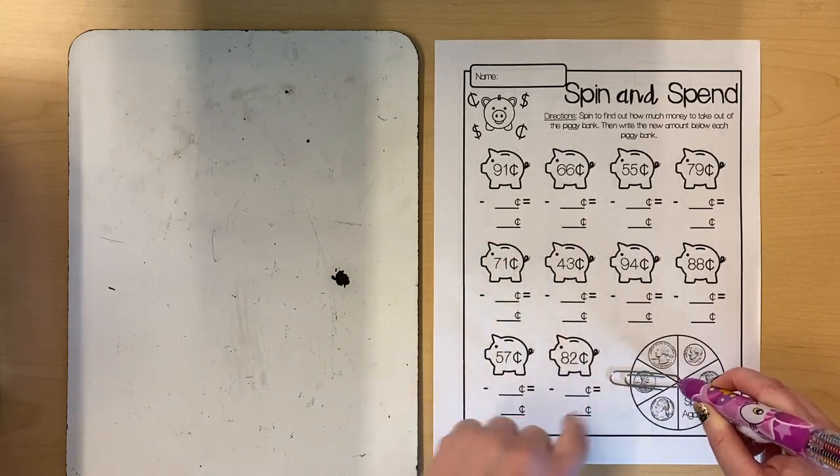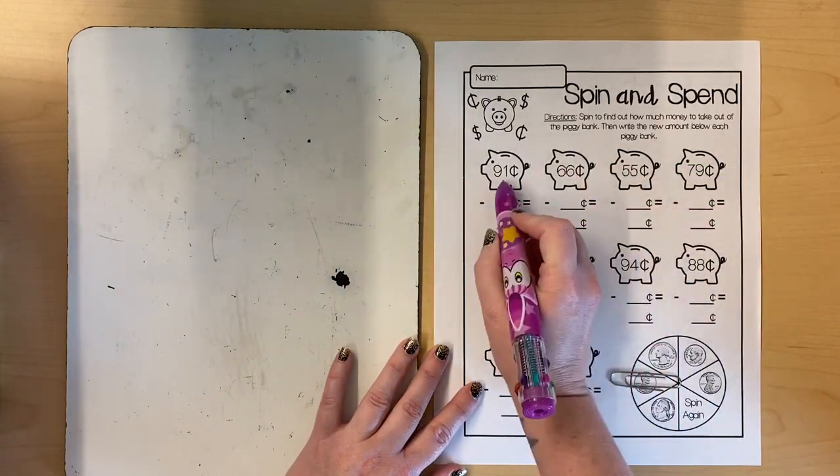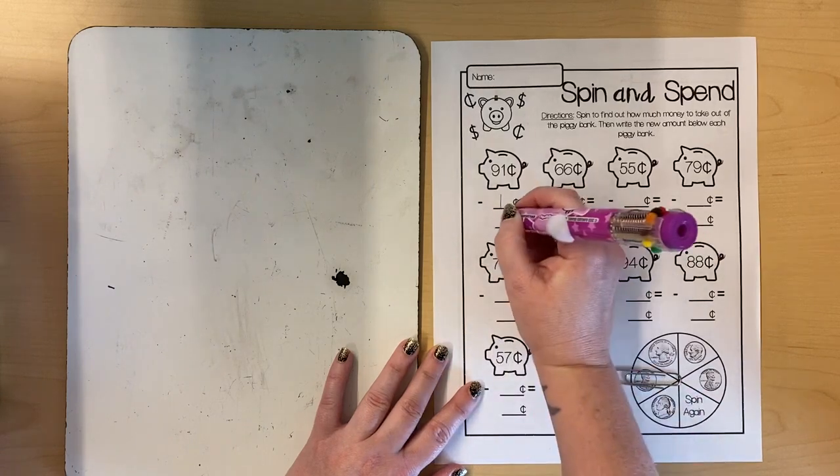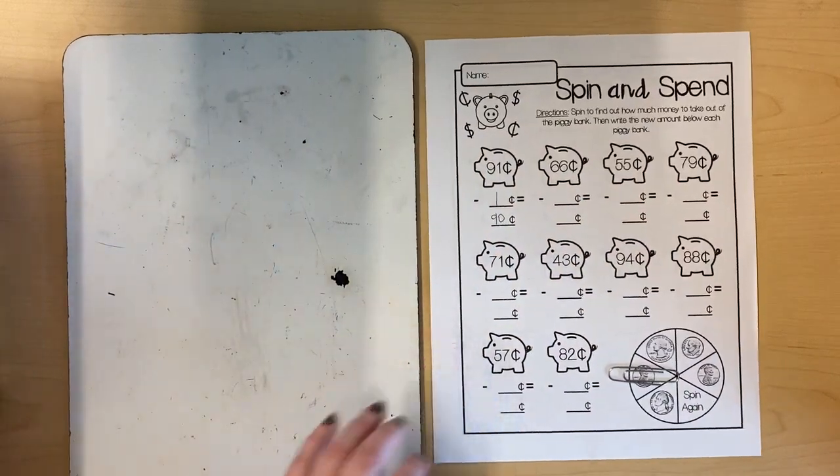I'm taking one penny out of my piggy bank. That's one cent. 91 cents minus one cent is 90 cents. That was an easy one for me to do.